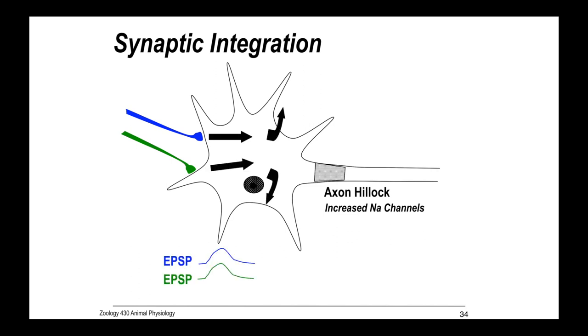However, if they're both excitatory and they're close enough together, we can have spatial summation. That would lead to meeting threshold at the axon hillock and summation, so that then we can transmit that signal down the axon. Spatial summation requires that they're close in distance.